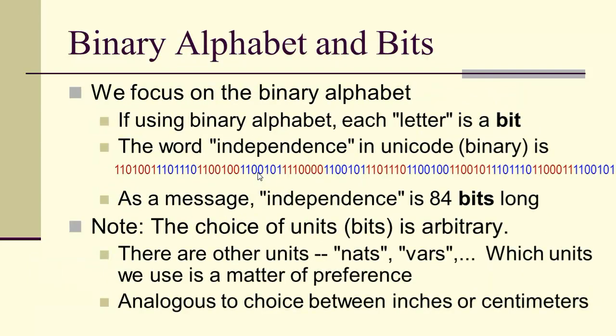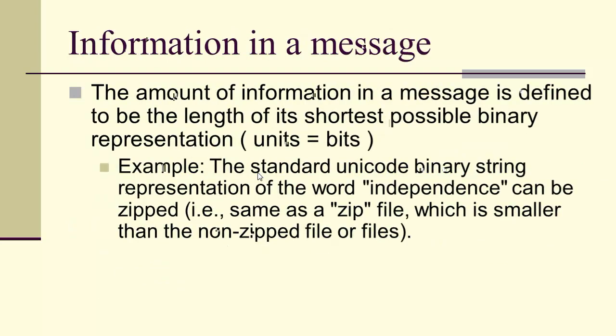We're going to focus on the binary alphabet, in which each letter is known as a bit. The word 'independence' in Unicode binary is 84 bits long. The choice of units — bits — is arbitrary; we could use nats or vars, just like choosing between inches or centimeters. The information in a message is defined to be the length of its shortest possible binary representation, measured in bits.